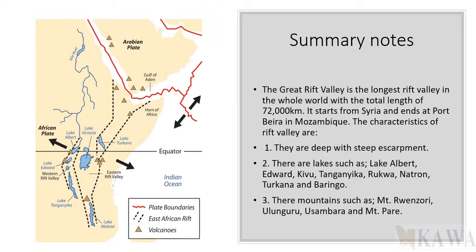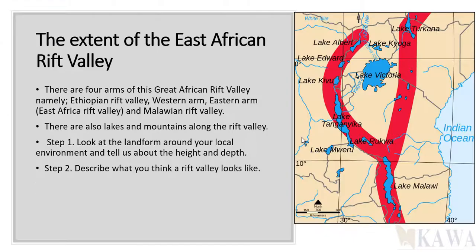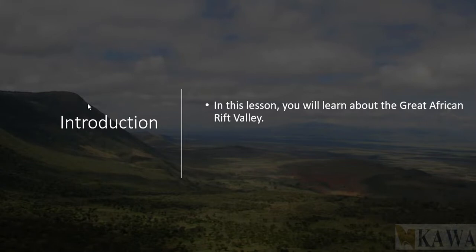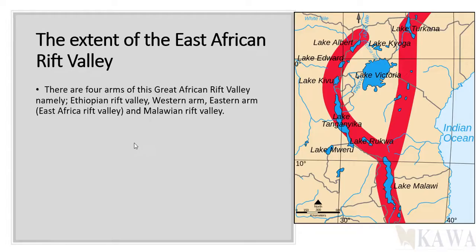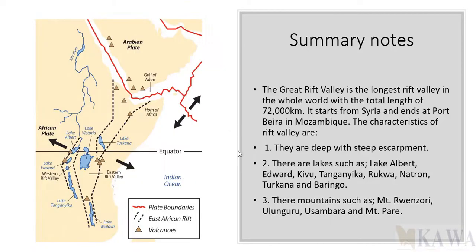What are the characteristics of the rift valley? One: there are deep escarpments — these are the steep mountain sides along the rift valley. There are also lakes, and these lakes are elongated — they are long. Do you see how they look? These rift valley lakes are elongated, unlike Lake Victoria which has swamps around it. The rift valley also tends to have salt lakes, and the lakes are deep.